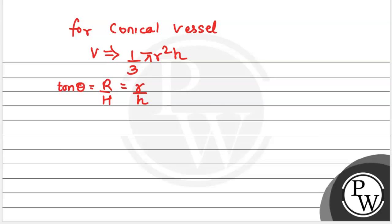For conical vessel, volume V equals 1/3 π r² h.